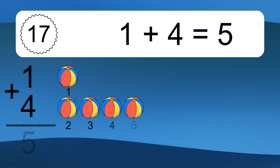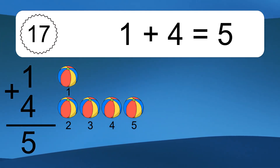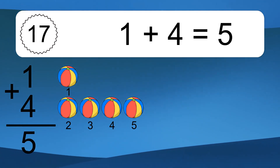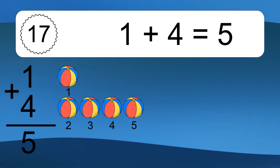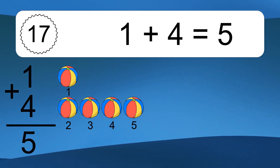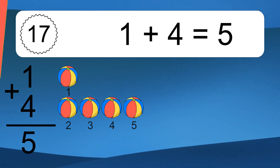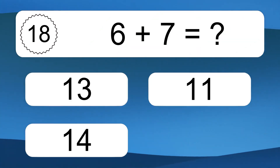1 plus 7 equals 8. Let's count it. 1, 2, 3, 4, 5, 6, 7.